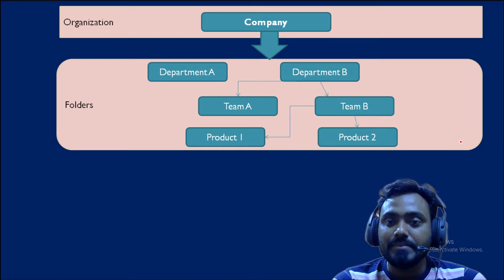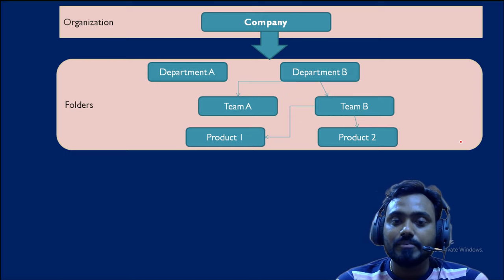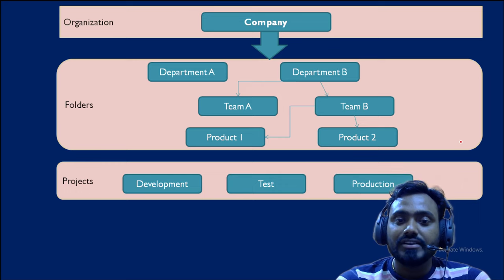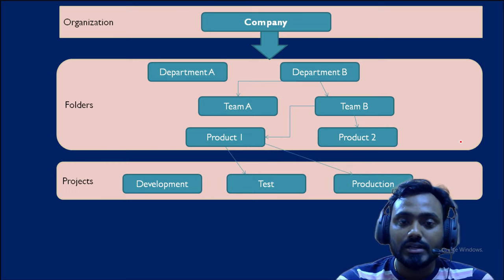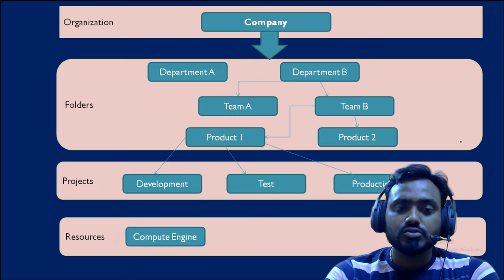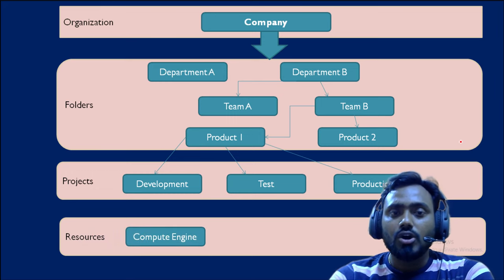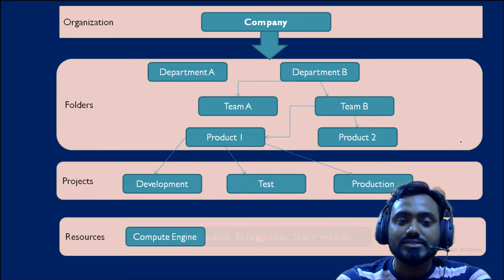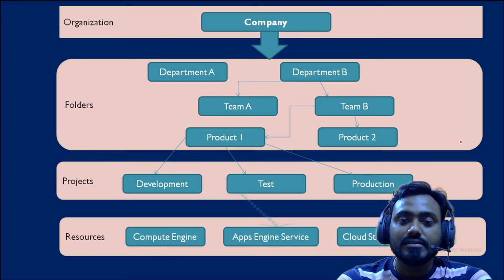Under the teams we have products, and under the product we have the actual projects. A project could be your development, test, or production environment. The last layer is where your actual resources are organized — these could be Compute Engine, Cloud Storage, or any GCP service.